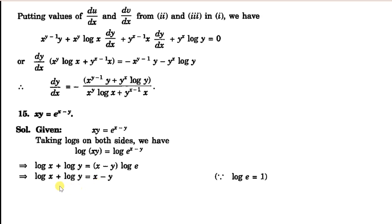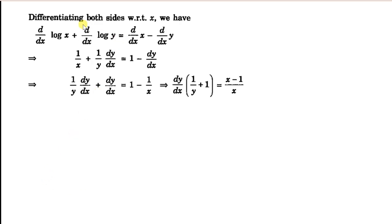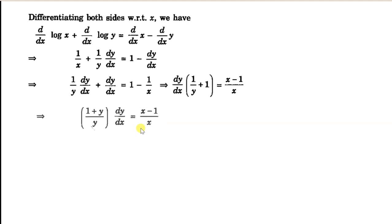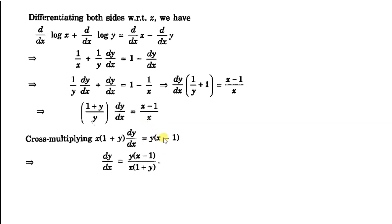Now differentiate with respect to x. We get 1 by x plus 1 by y times dy by dx equal to 1 minus dy by dx. Collecting the terms containing dy by dx on one side: dy by dx times quantity 1 by y plus 1 equals 1 minus 1 by x. So dy by dx equals x minus 1 times y, divided by x times 1 plus y.